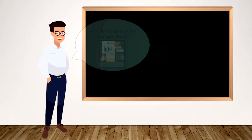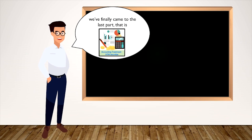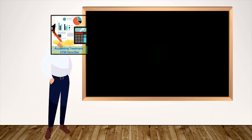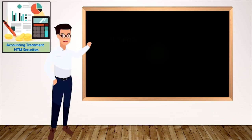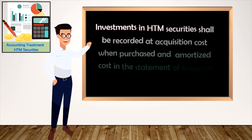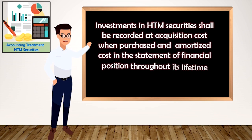We've now come to the last part of this video. We are going to go through the accounting treatment of held to maturity securities. Investments in HTM securities shall be recorded at acquisition cost when purchased and at amortized cost in the statement of financial position throughout its lifetime.